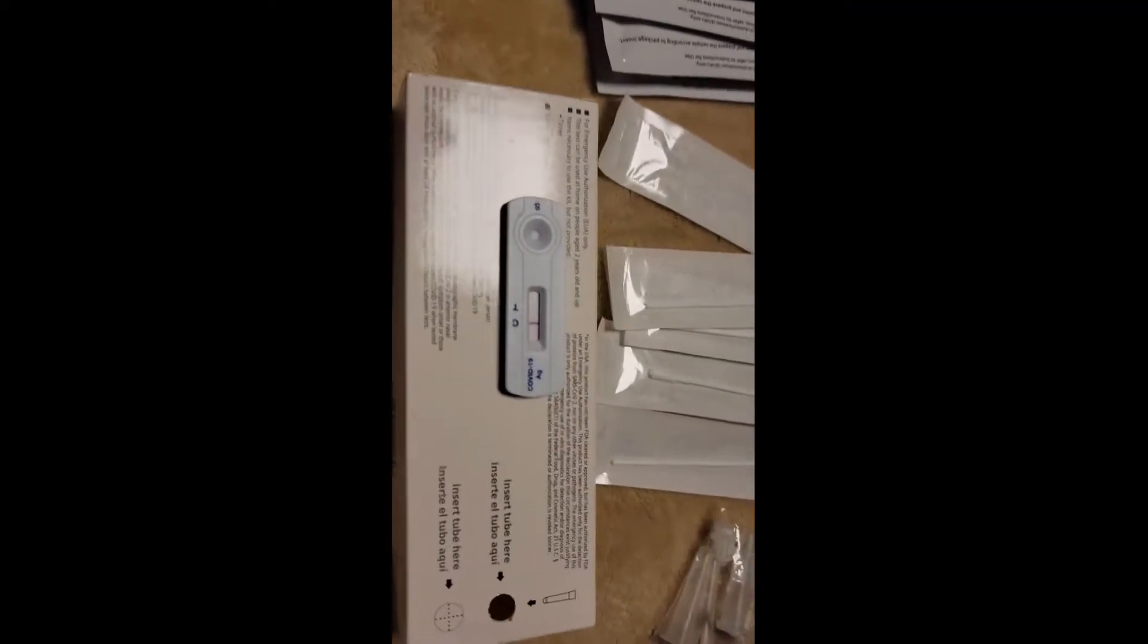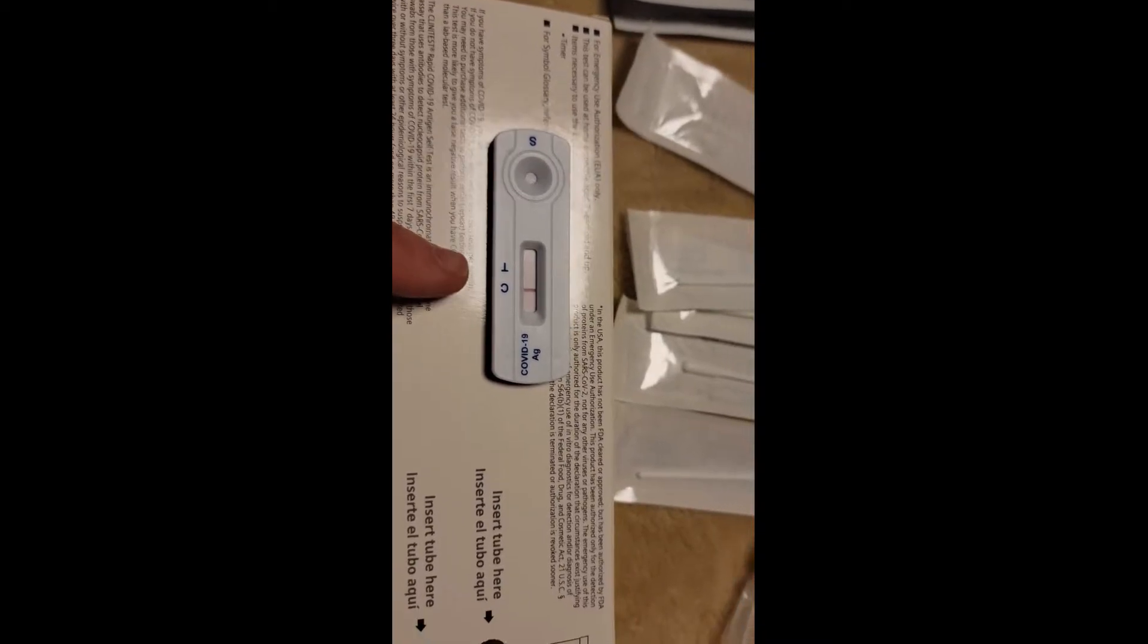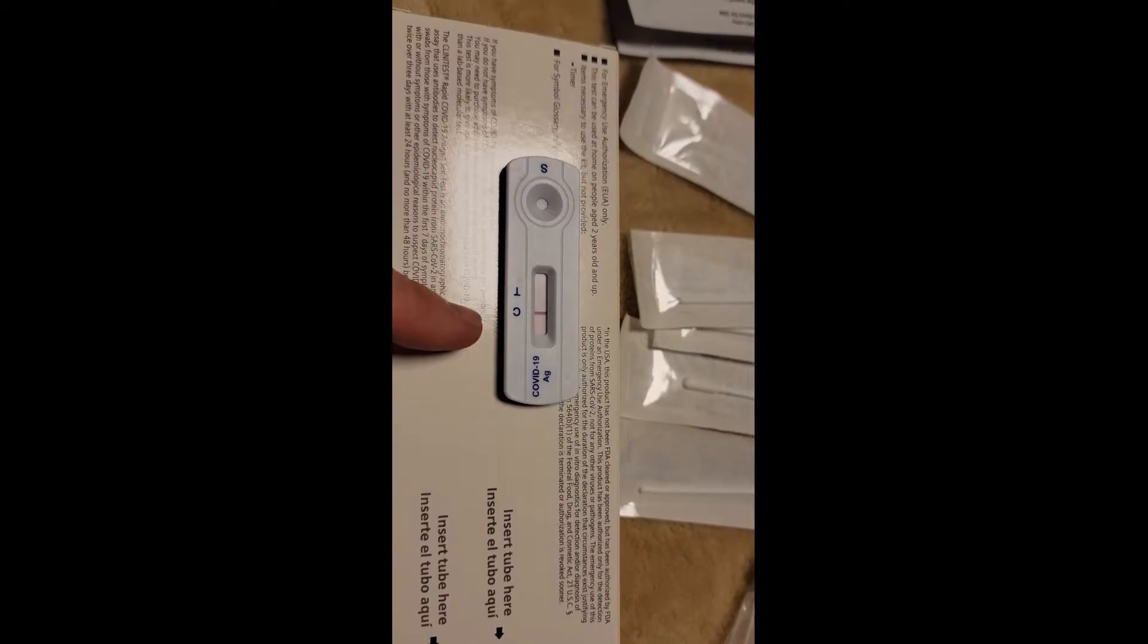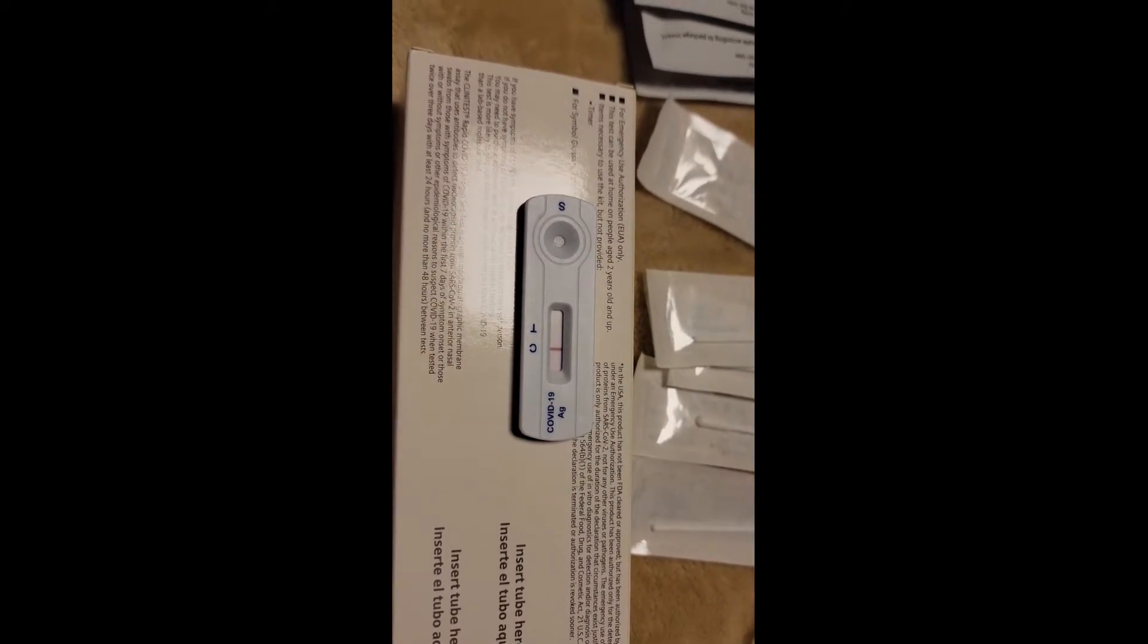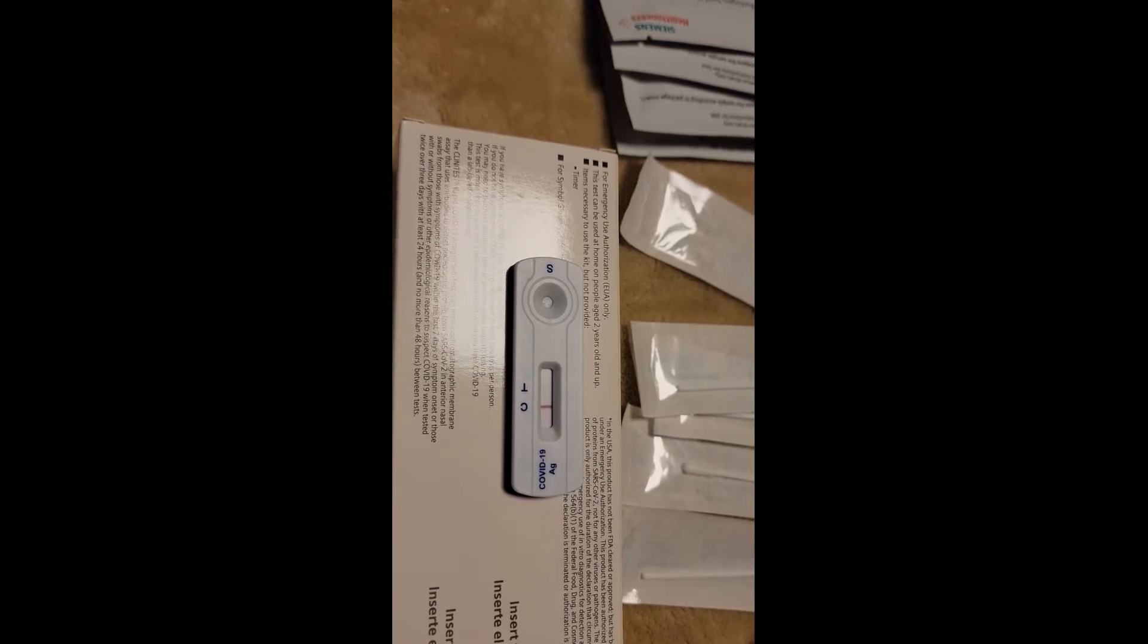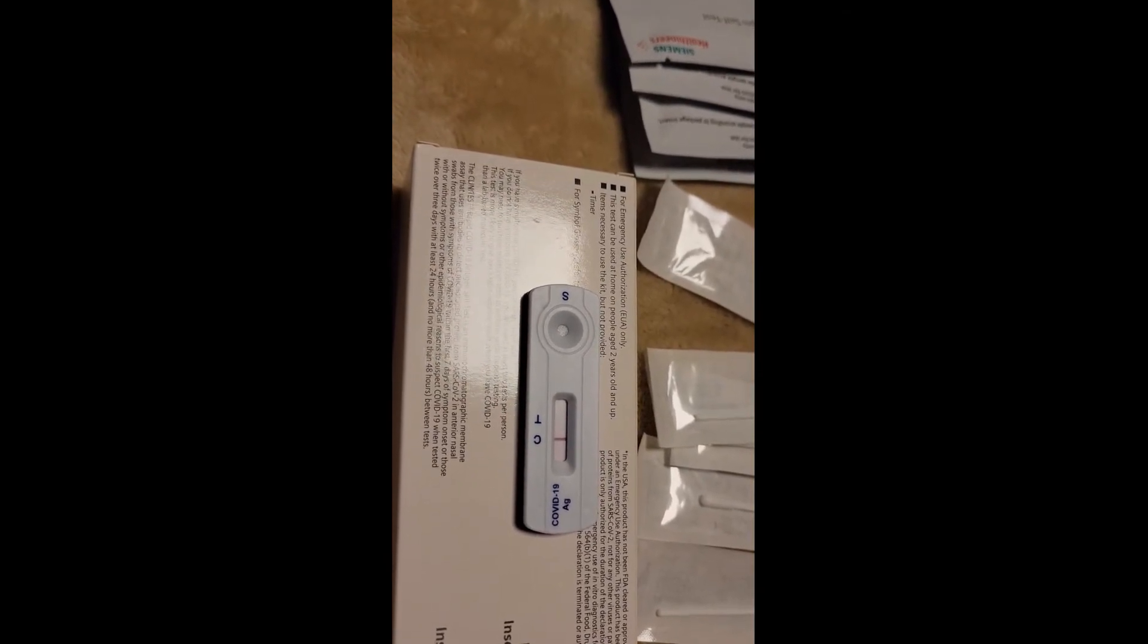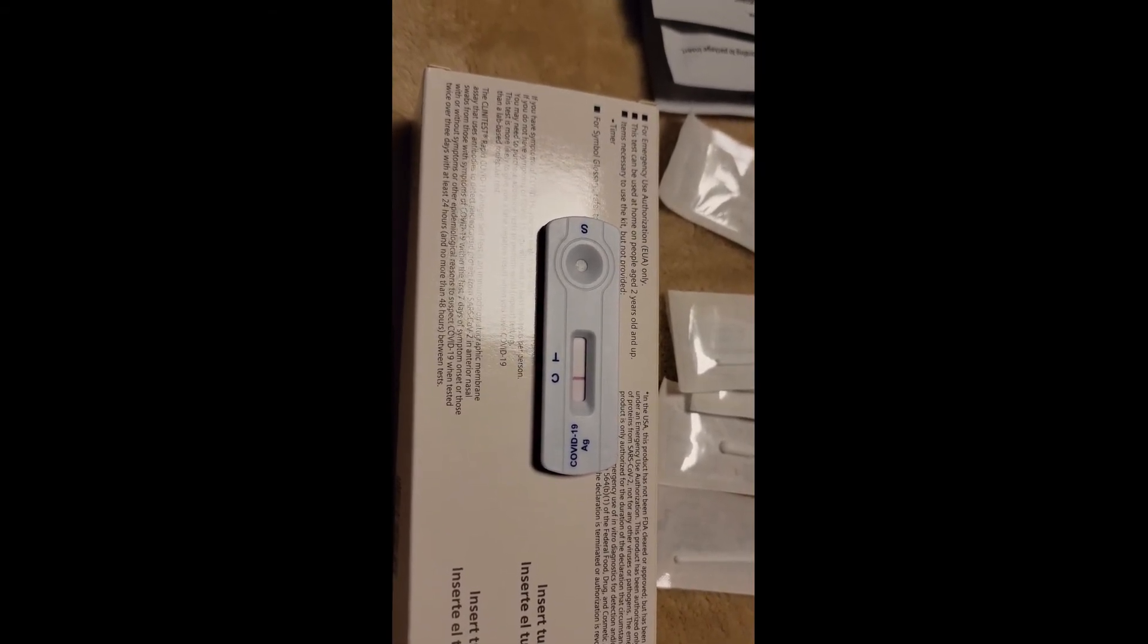Okay. So one thing I forgot is if it has the T in there, then it's obviously positive. The C, if it's just a line on the C, it's negative. C and T is positive. And just T is an invalid reading. So there I thought I would clarify that. And I think we covered all the bases on this one. Make sure to follow the instructions. And have a good day.